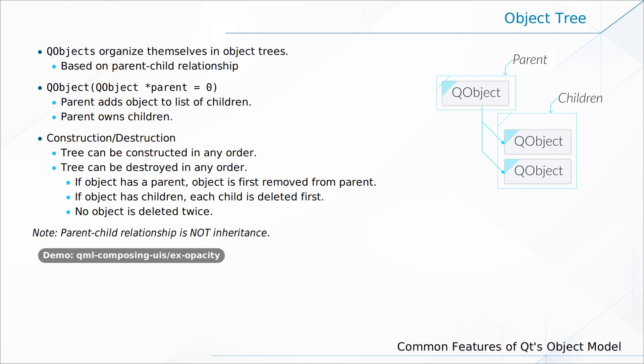If a child is deleted, it will go to its parent and say: I'm out of business, can you please take me out of your list of objects to delete when you die? The beauty of this is that all you need to do is keep pointers to the topmost QObjects around and delete those — but again, on the C++ level.